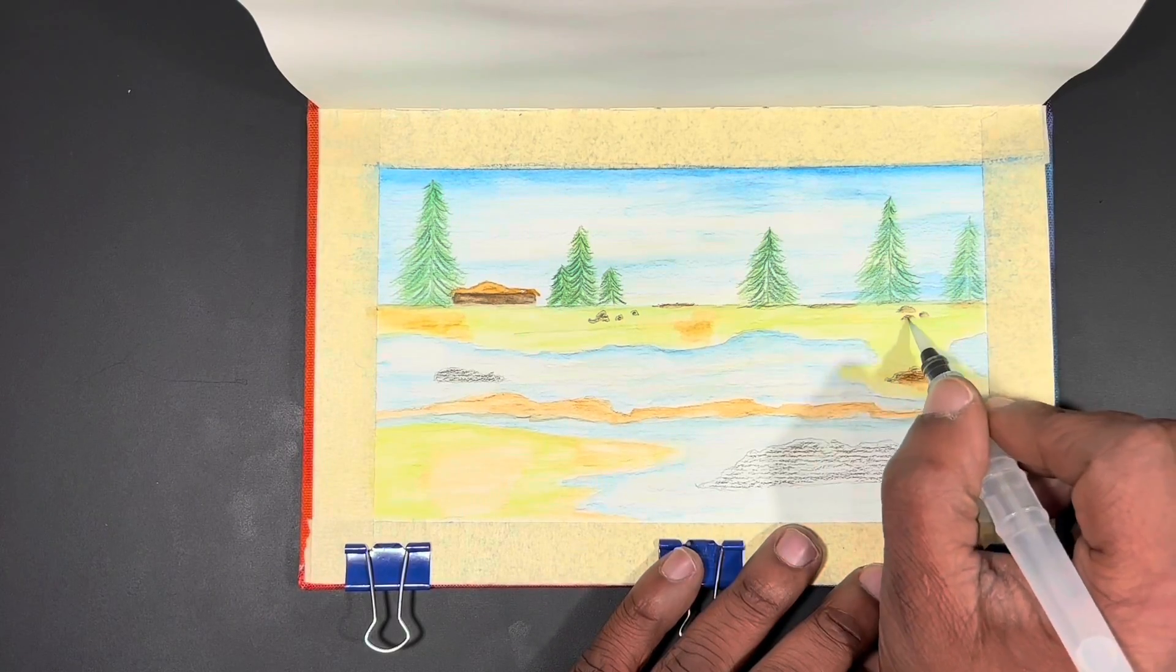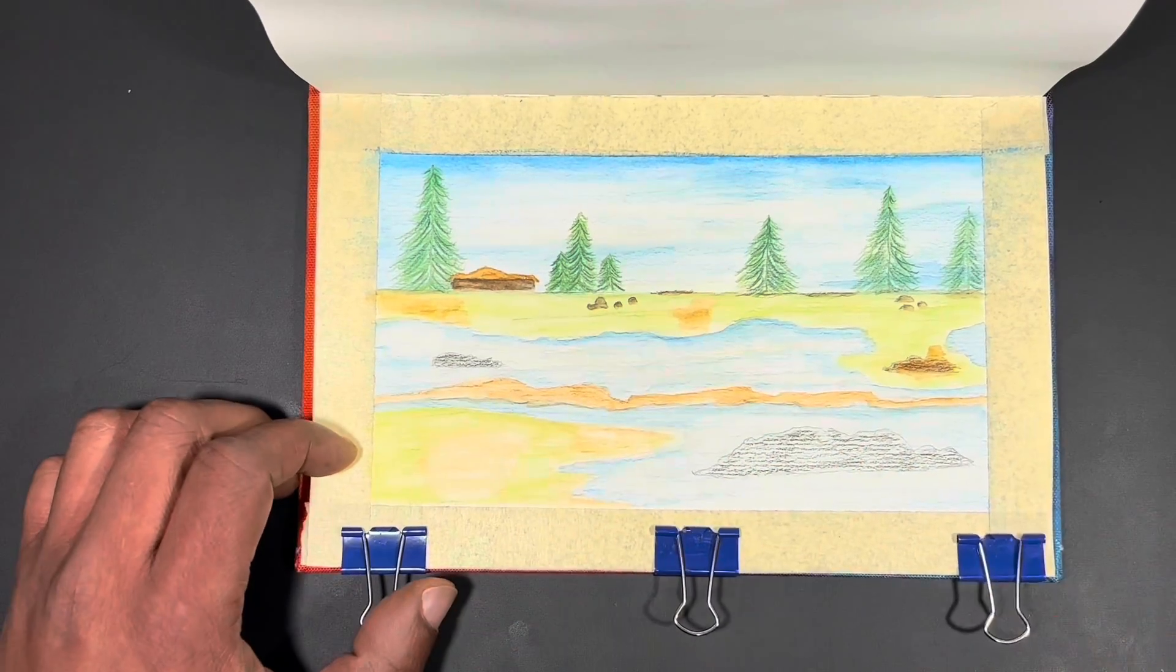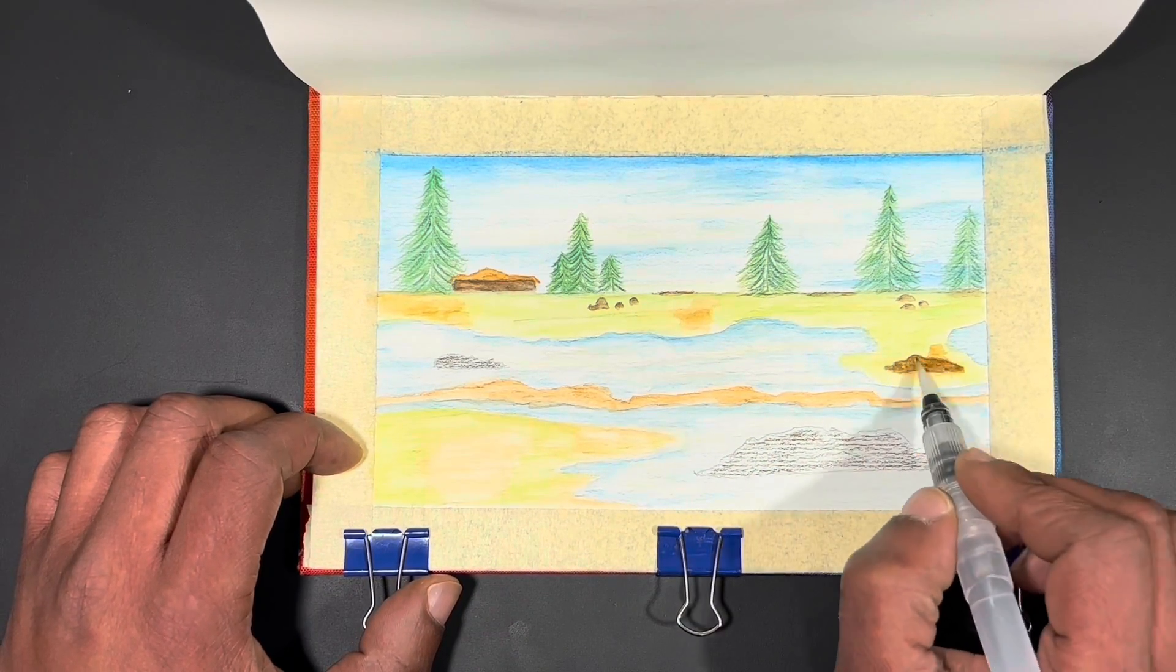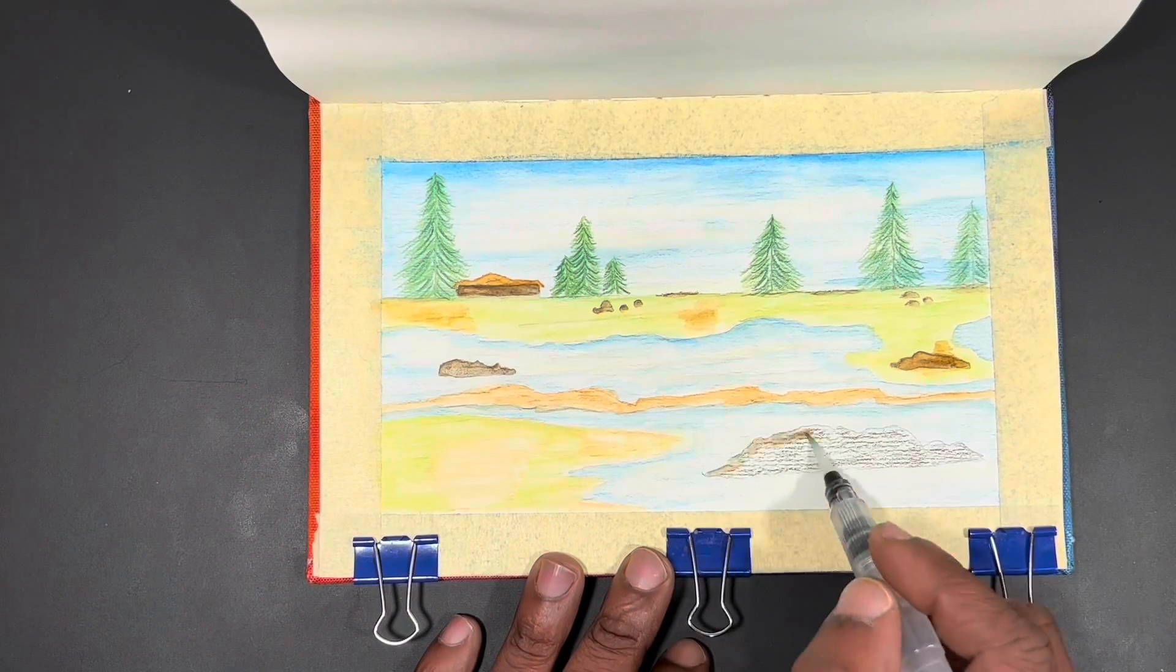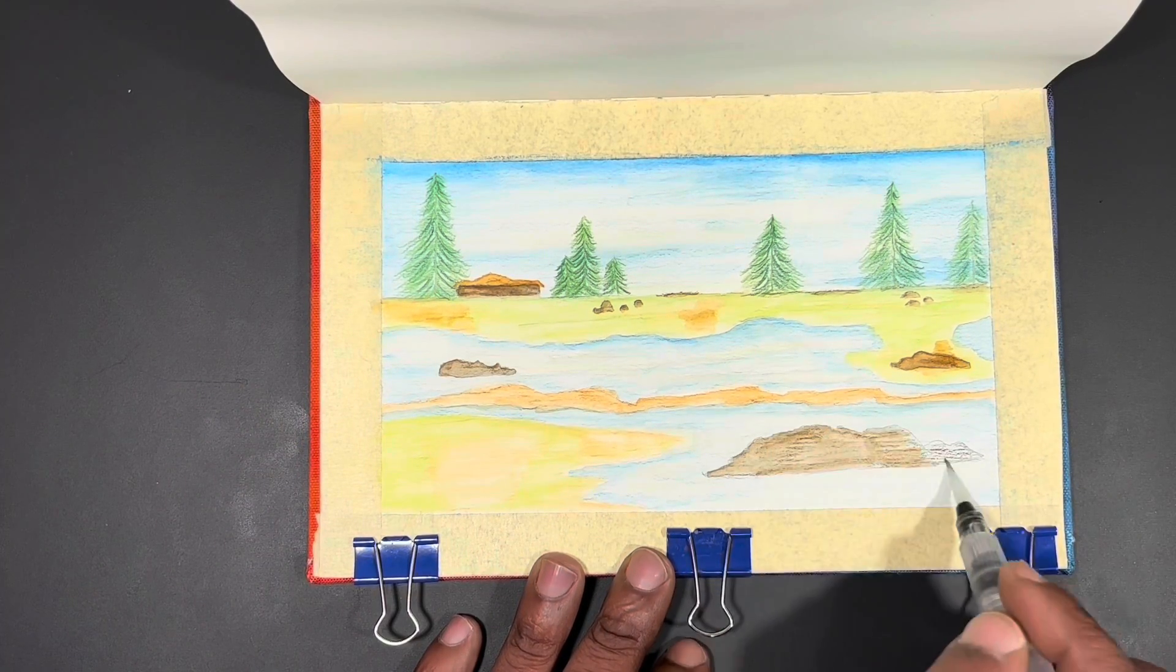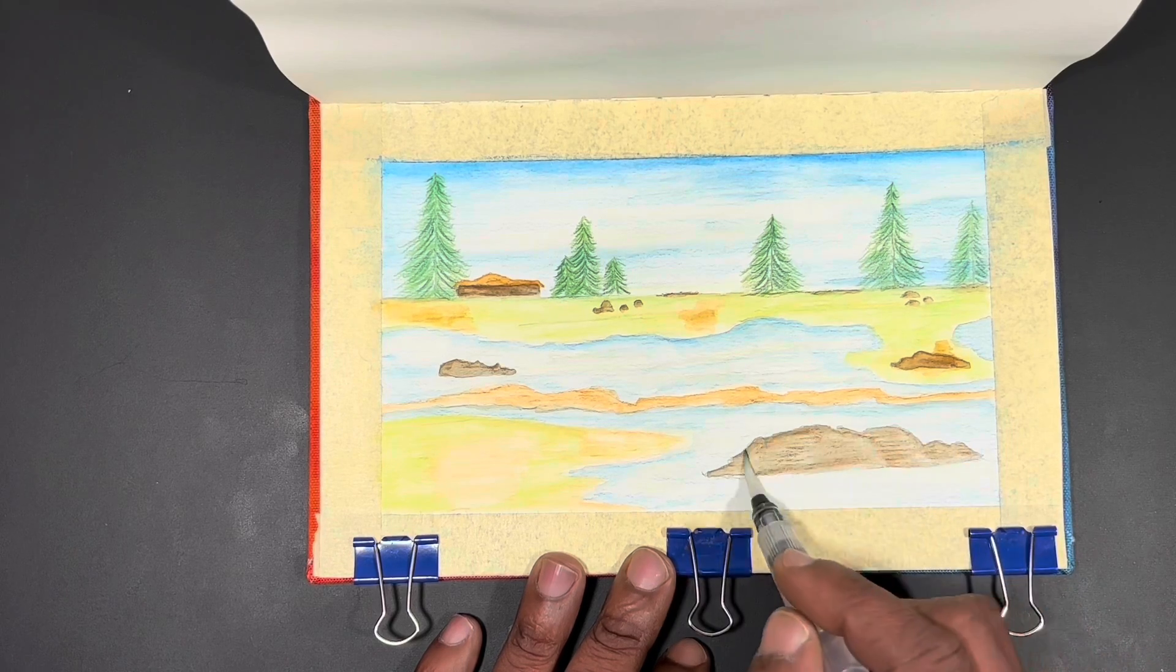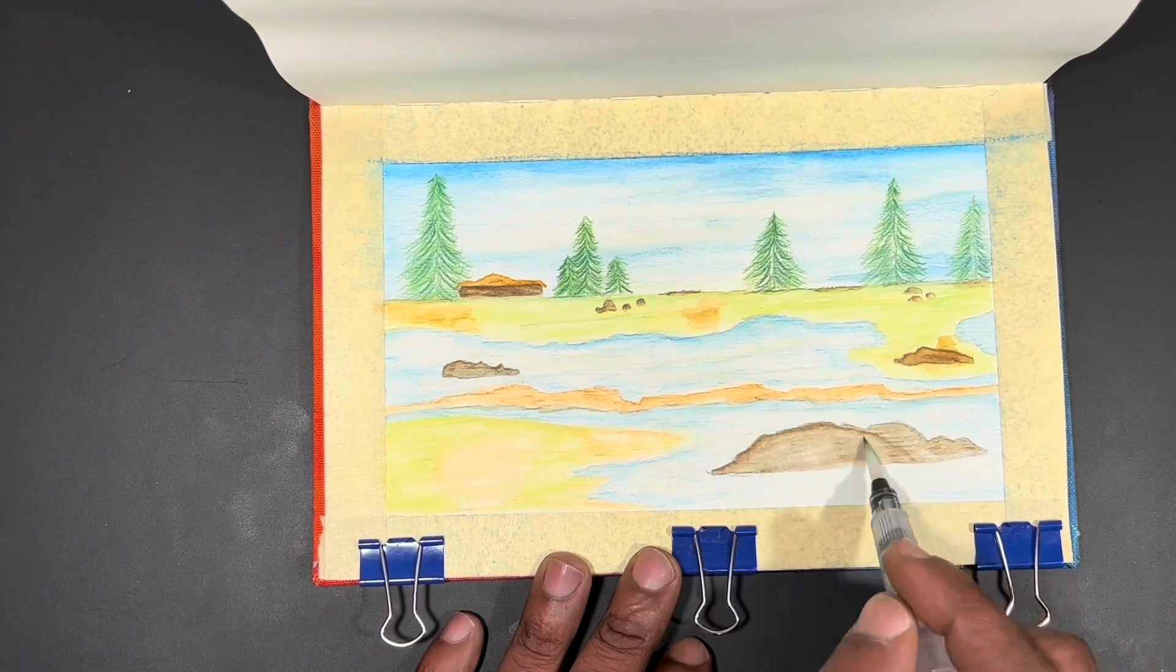And then I'm just going to take a water brush and disperse the pigment along everything that I painted in after the first layer dried. There being the house, the trees, and the rocks that I put in.